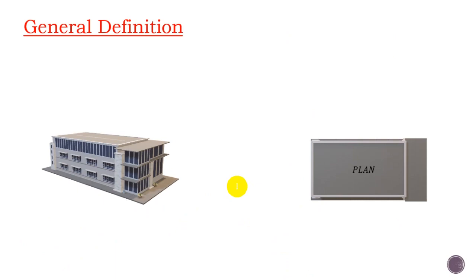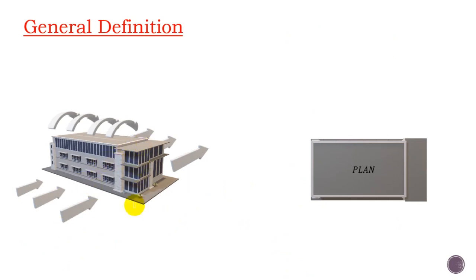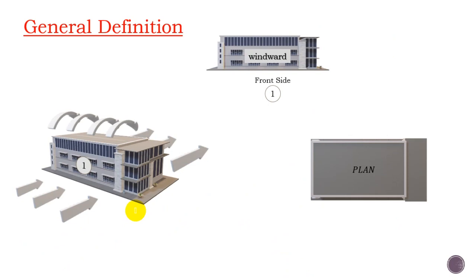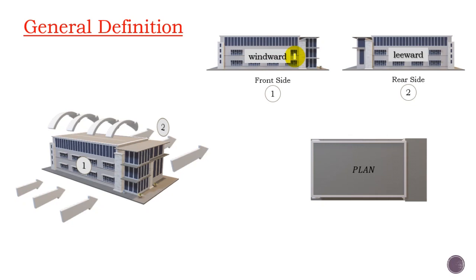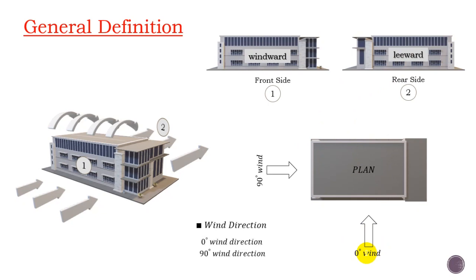For this building, the front side that the wind hits is called the windward wall, and the rear side where the wind leaves the building is called the leeward side. Looking at the plan of the building, we have two wind directions: 0° and 90°. This is per the standard method we are adopting. These two directions pretty much cover all cases, since wind blowing in one direction is symmetric to its opposite.